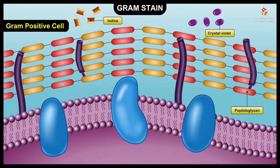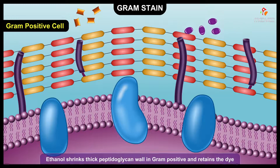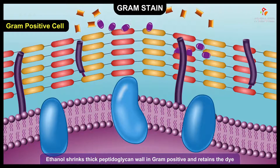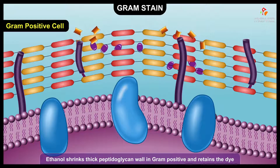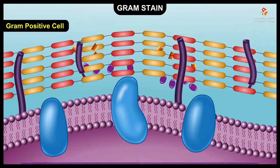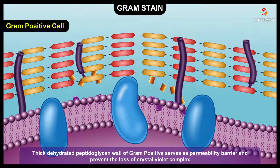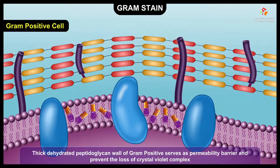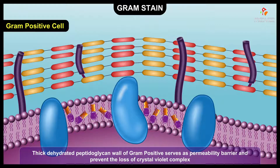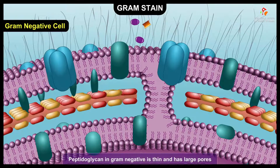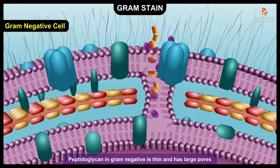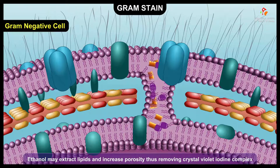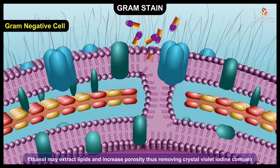Generally, the Gram stain correlates with the cell wall structure among bacteria. The ethanol is thought to shrink the thick peptidoglycan in Gram positive cells, thus retaining the dye. The thick dehydrated peptidoglycan layer of Gram positive bacteria acts as a permeability barrier, preventing the loss of the crystal violet-iodine complex. In contrast, the peptidoglycan in Gram negative bacteria is very thin and has large pores — ethanol may extract lipids and increase porosity, thus removing the crystal violet-iodine complex.